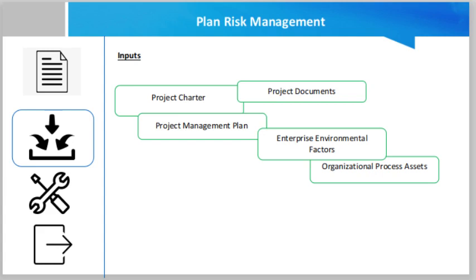Project documents that can be considered as inputs include the stakeholder register, which contains details of the project stakeholders and provides an overview of their project roles and their attitude toward risk. The enterprise environmental factors include the overall risk thresholds set by the organization or key stakeholders. Organizational process assets include the organizational risk policy, risk categories, common definitions of risk concepts and terms, risk statement formats, templates, roles and responsibilities, and authority level.